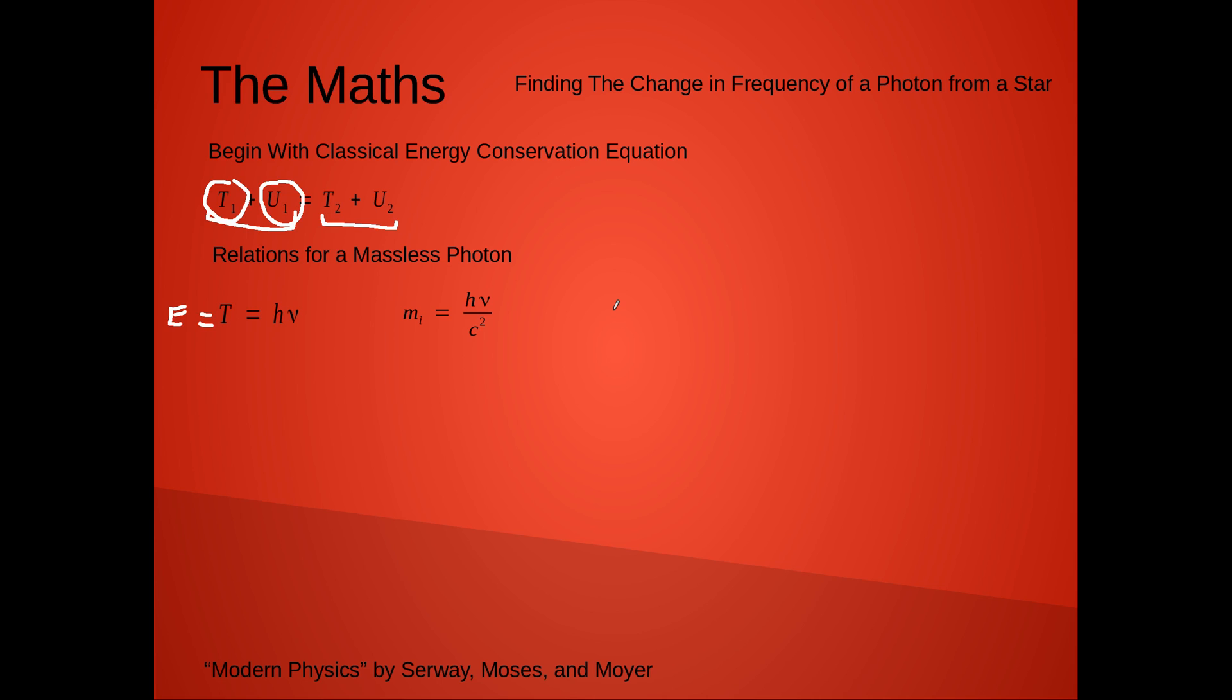The other thing we'll need to know is that the effective inertial mass of the photon is given by Planck's constant times its frequency, all over c squared, and you might recognize the combination of these two as E equals mc squared, where your energy here is Planck's constant times the frequency of the photon.